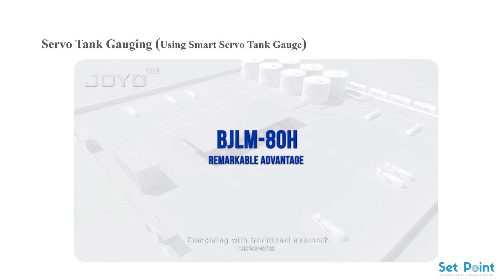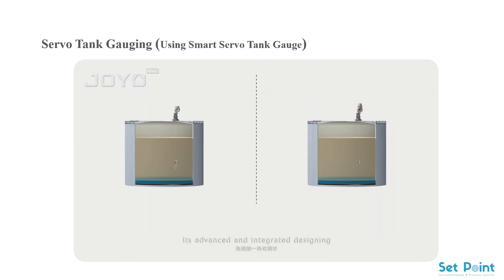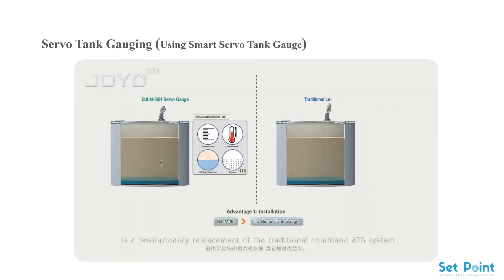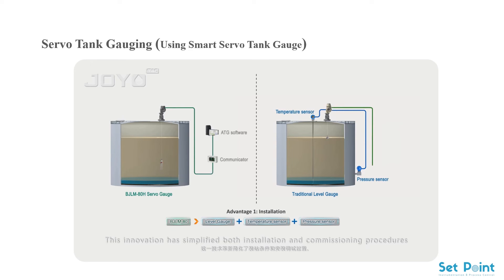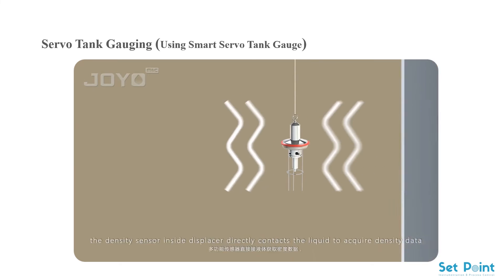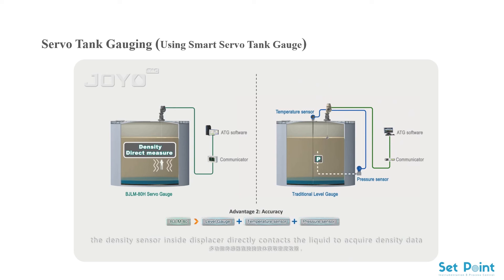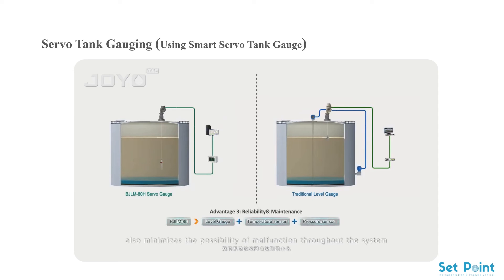Compared with the traditional approach, the BJLM 80H servo ATG system has several remarkable features. Its advanced and integrated design is a revolutionary replacement of the traditional combined ATG system. This innovation has simplified both installation and commissioning procedures and greatly lowered the costs of operations and maintenance. With its high-precision resonance mechanism, the density sensor inside the displacer directly contacts the liquid to acquire density data, guaranteeing better authenticity and precision. This advanced integrated design also minimizes the possibility of malfunction and rules out unstable operation caused by excess dispersed fault points of the traditional approach.